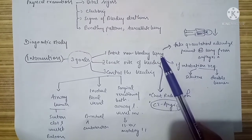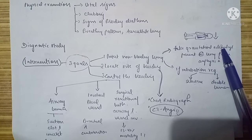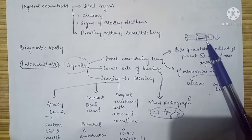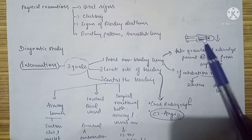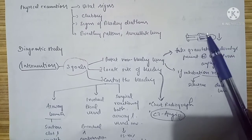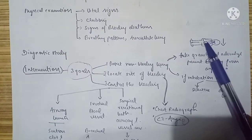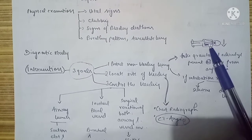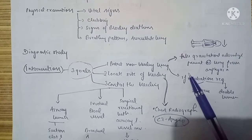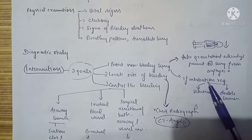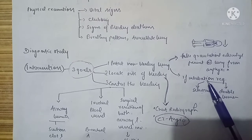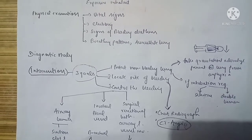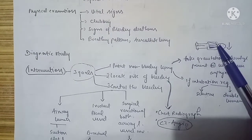To protect the non-bleeding lung, we take gravitational advantage and position the patient lying on the side of the bleeding so that the normal lung does not asphyxiate with the blood. We can also perform selective intubation or double-lumen intubation to prevent the normal lung from asphyxiation.